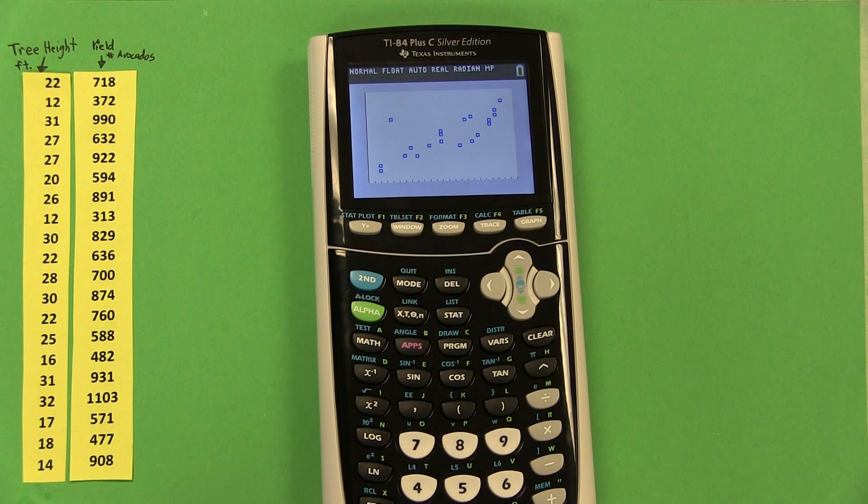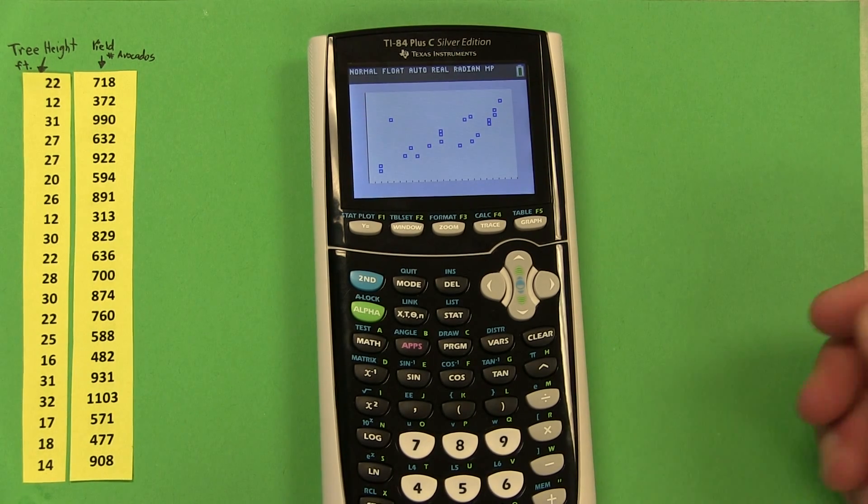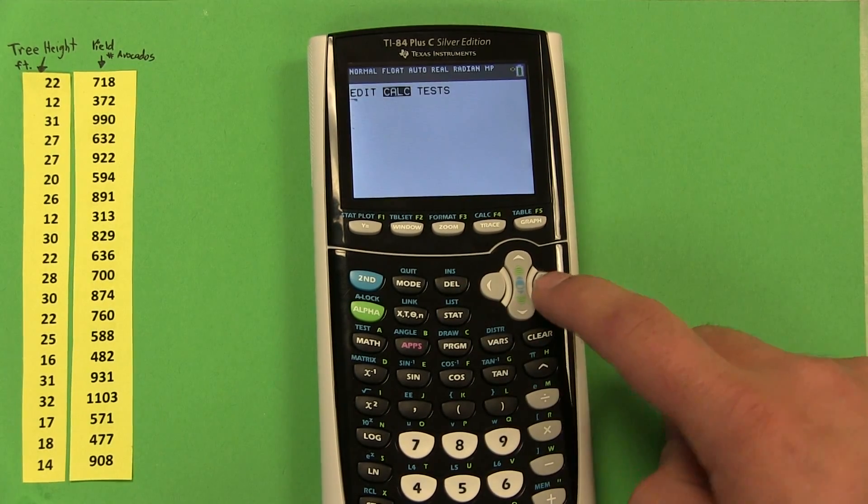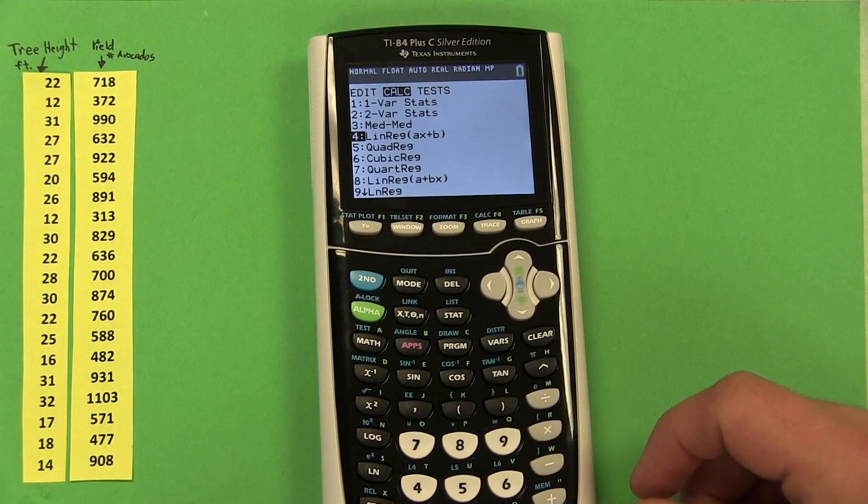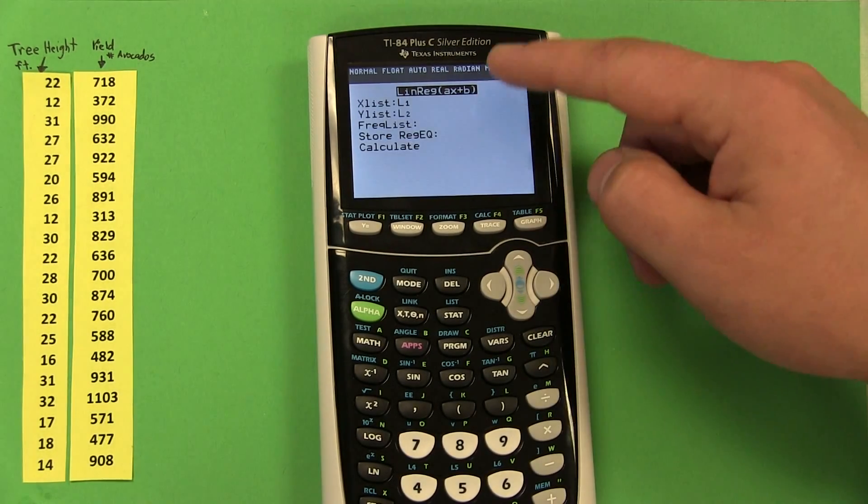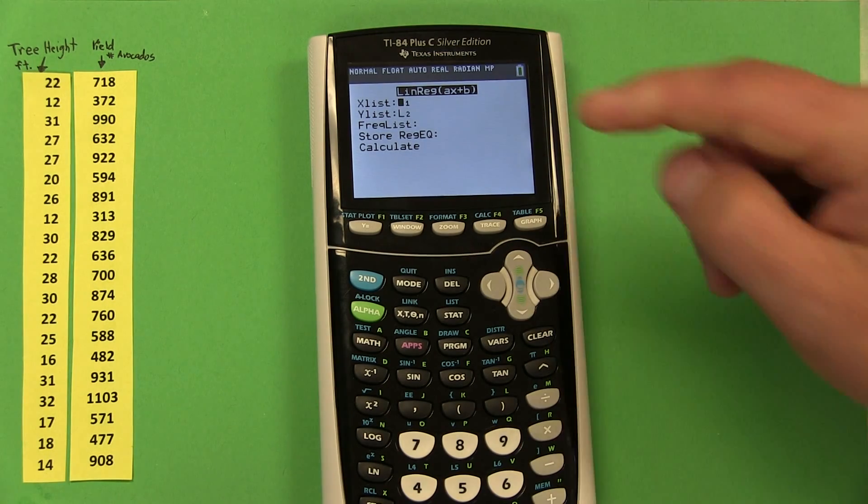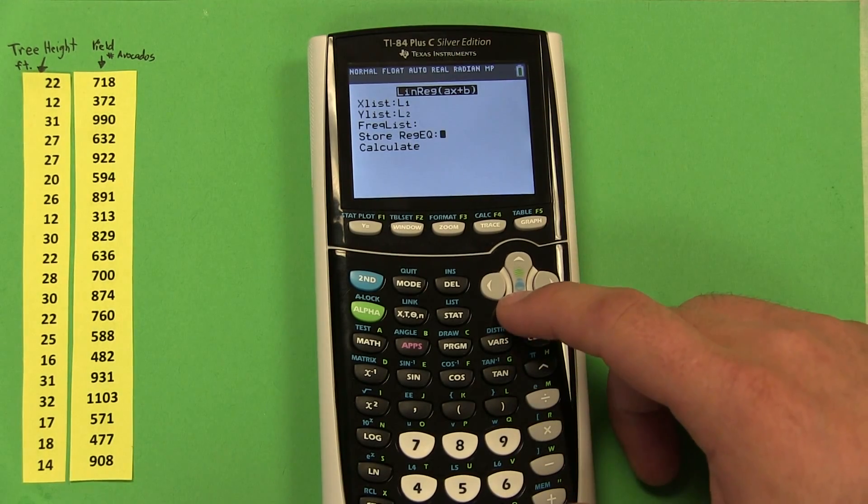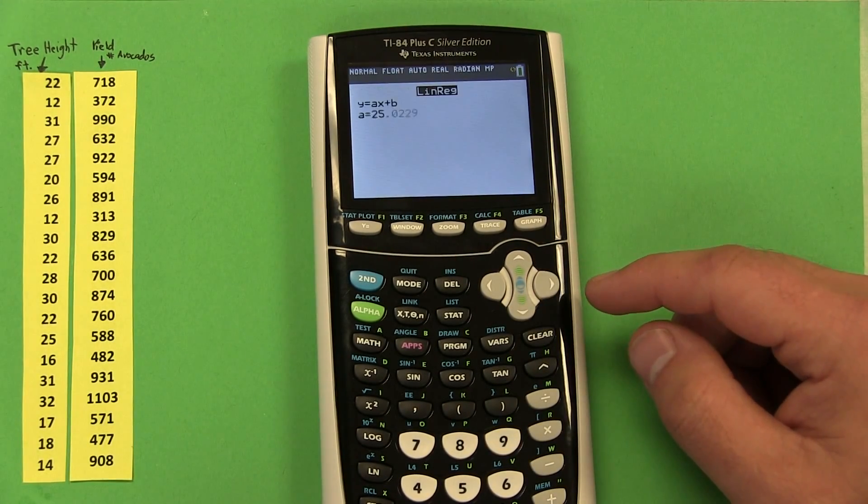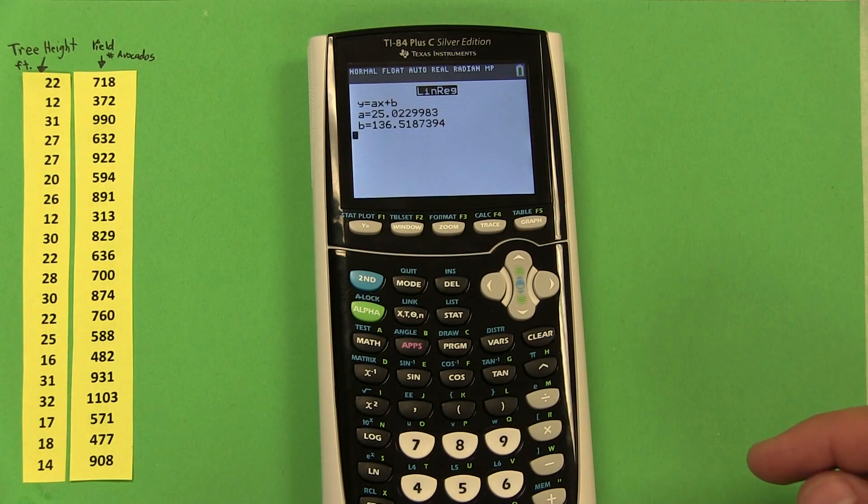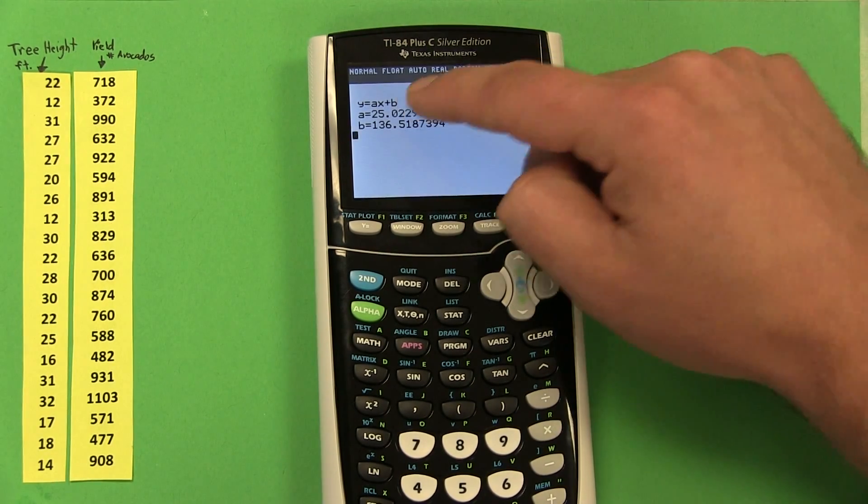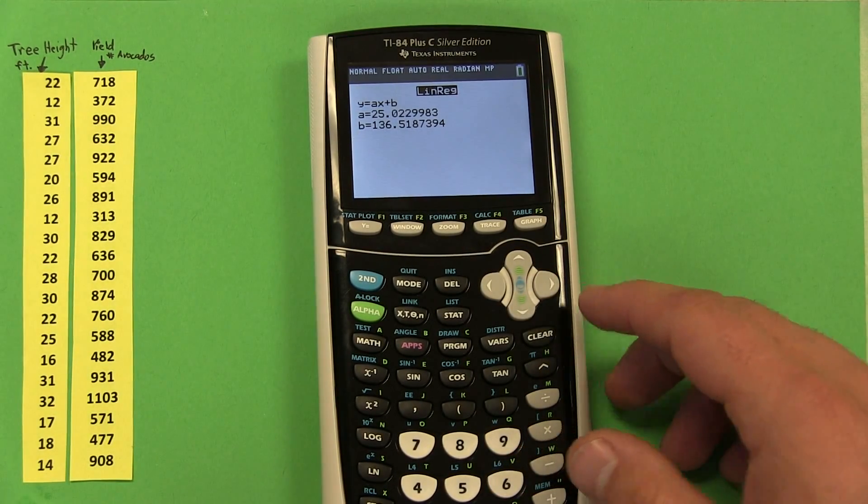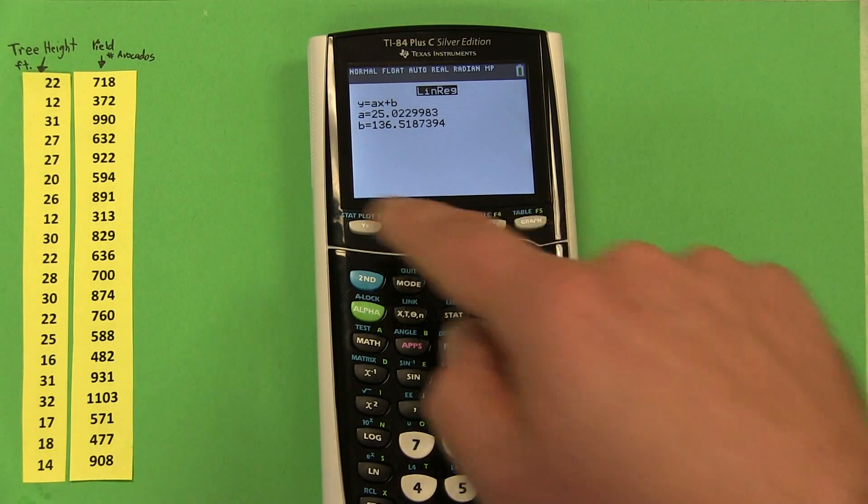The next thing we want is to come up with the least squares regression equation for this. And there's a few ways to do this. One way is press stat again and go over to the calculate menu. Down here, option 4, it says lin reg. When I press that, I get similar options to the scatter plot menu. For my explanatory, I want list 1 again. And for my response, I want list 2. And when I press calculate, here's the least squares regression equation. It says y equals ax, so our slope is about 25, and our y-intercept is 136. So let me go ahead and write that least squares regression equation right over here.